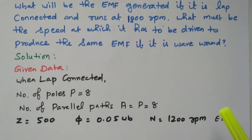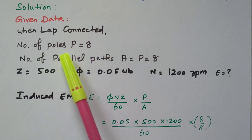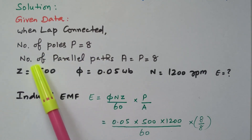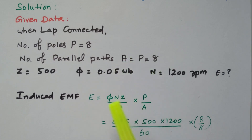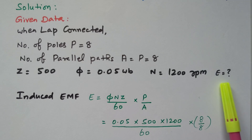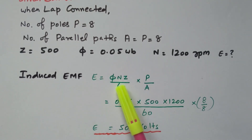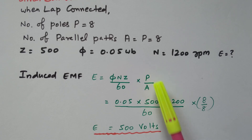First we will consider the lap connected case. The number of poles P equals 8. For lap connected, the number of parallel paths A equals the number of poles, so A = 8. The number of conductors is 500, flux is 0.05 Weber per pole, and speed is 1200 RPM. For this data, we need to find the EMF induced. The formula is EMF = φNZ/60 × (P/A).